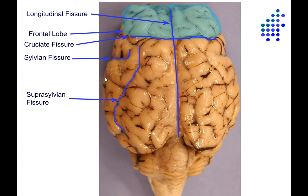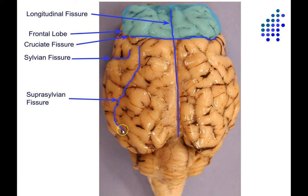Here's a trick for finding the suprasylvian fissure. You can see the longitudinal fissure runs anterior to posterior, and there are a series of smaller sulci running more or less parallel to it. The suprasylvian is the lateral-most sulcus that runs roughly parallel to the longitudinal fissure — the one that's furthest toward the side but still running more or less front to back.